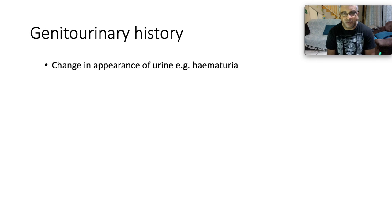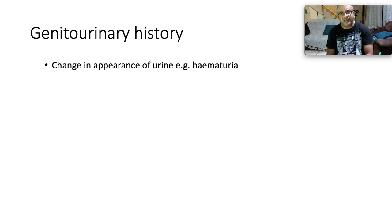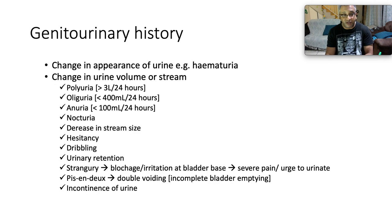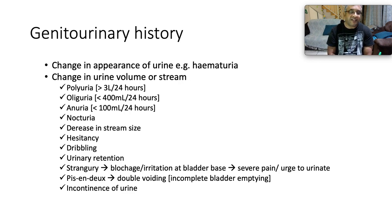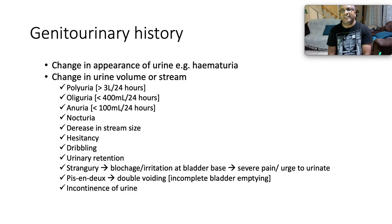When teasing out the systemic inquiry for the renal system, first ask about change in the appearance of urine — sometimes it's obvious macroscopic hematuria. Then inquire about changes in urine volume or stream. Polyuria is defined as passage of more than three liters per 24 hours, oliguria as less than 400 mL per 24 hours, and anuria as less than 100 mL per 24 hours.